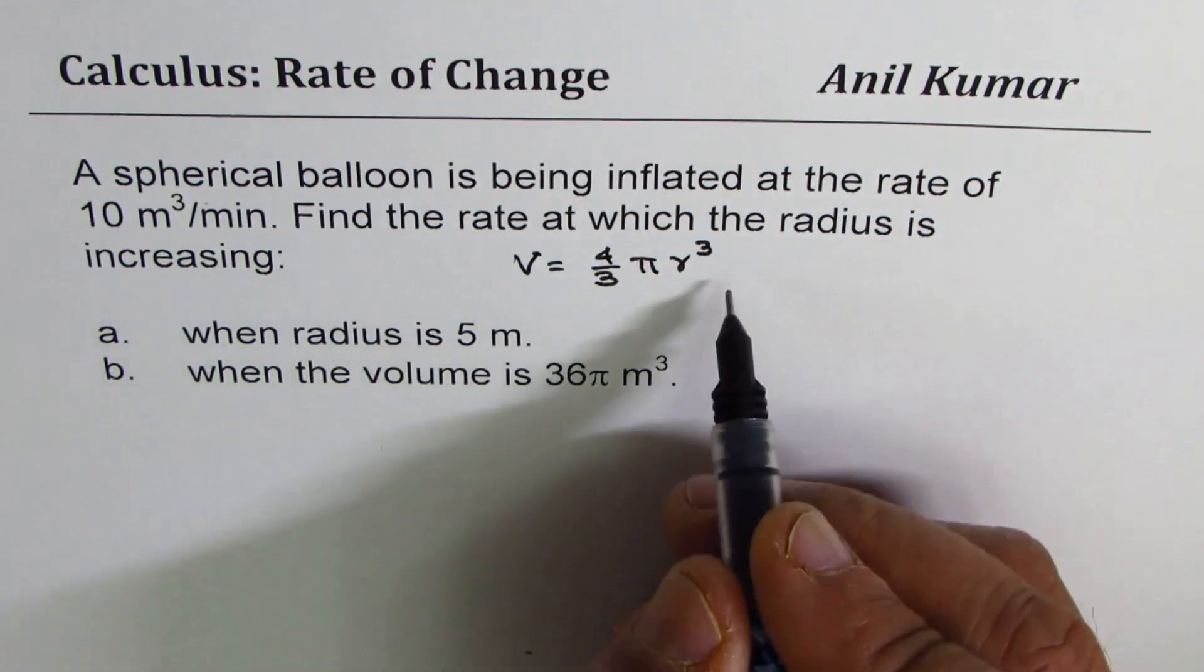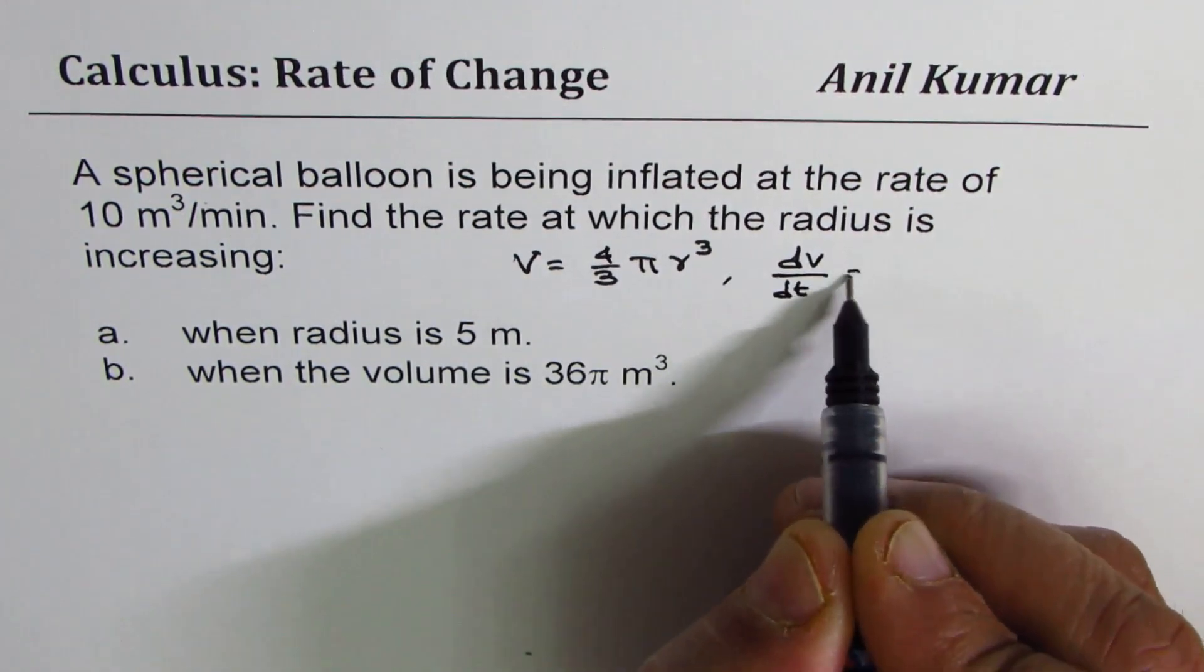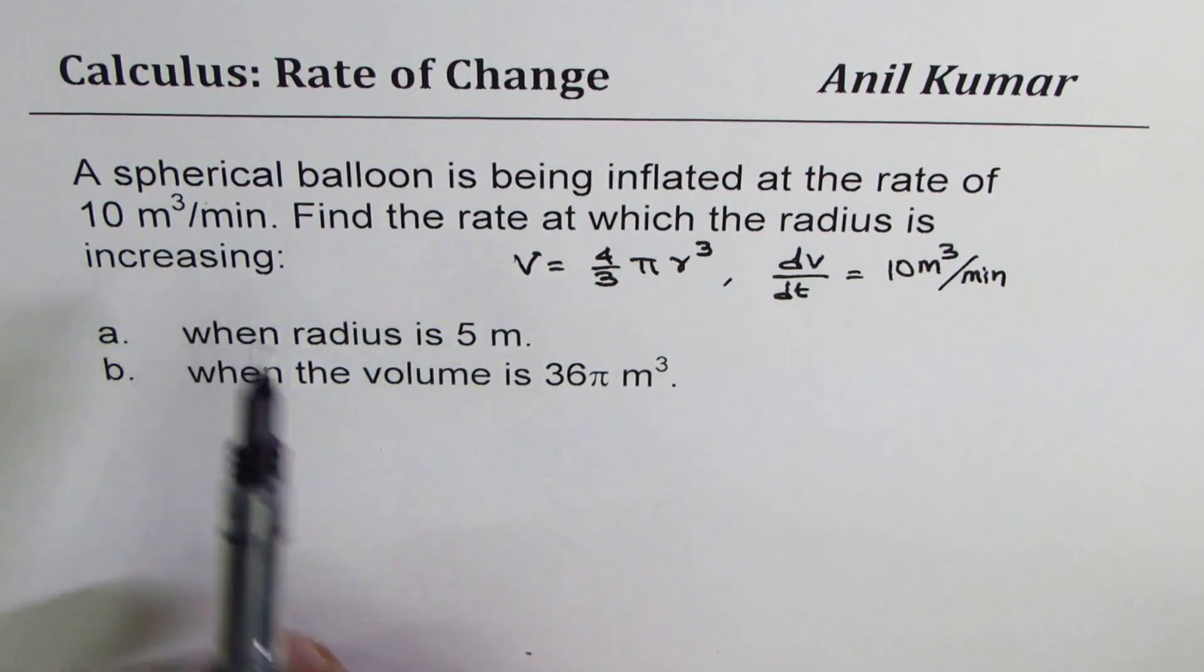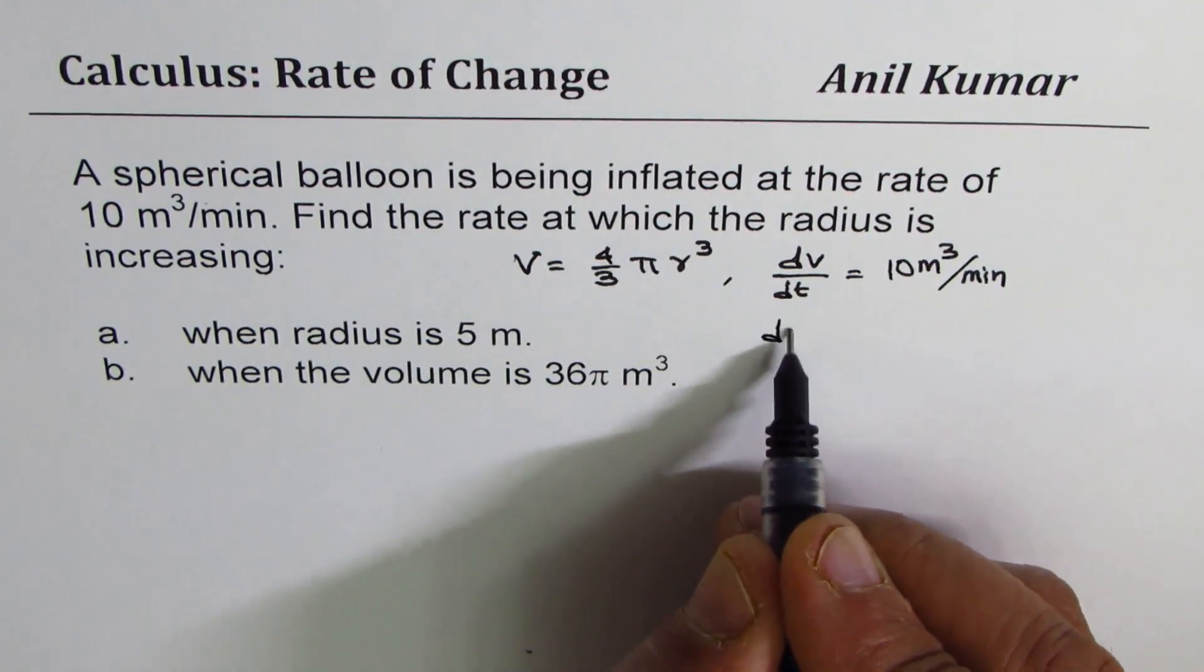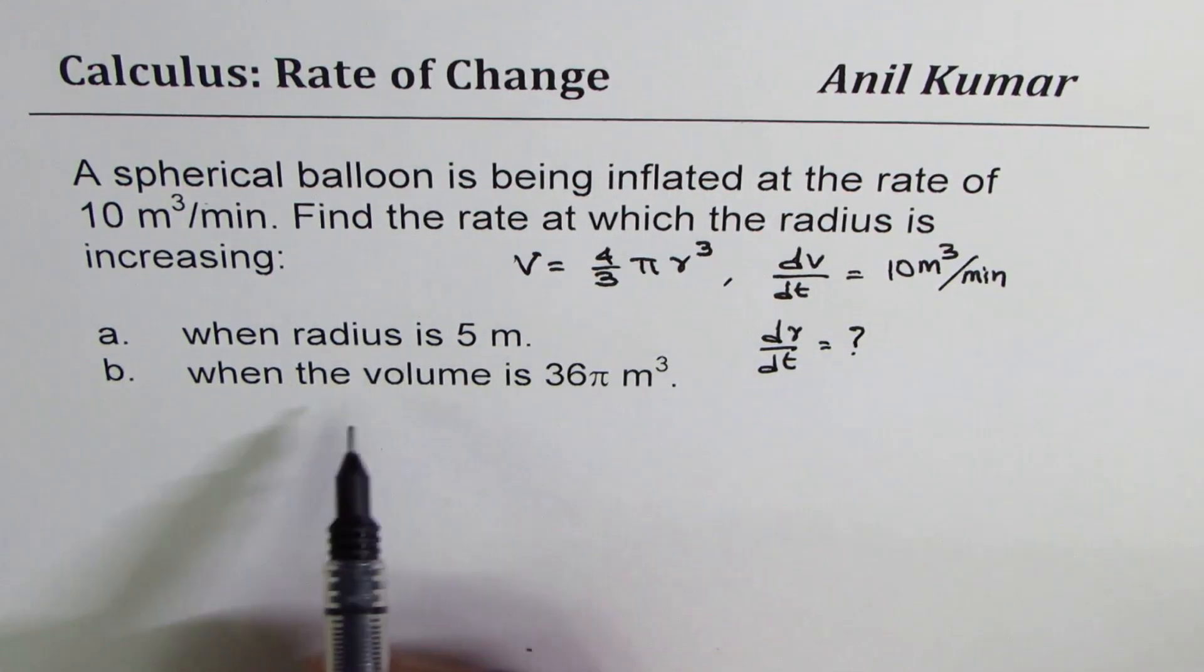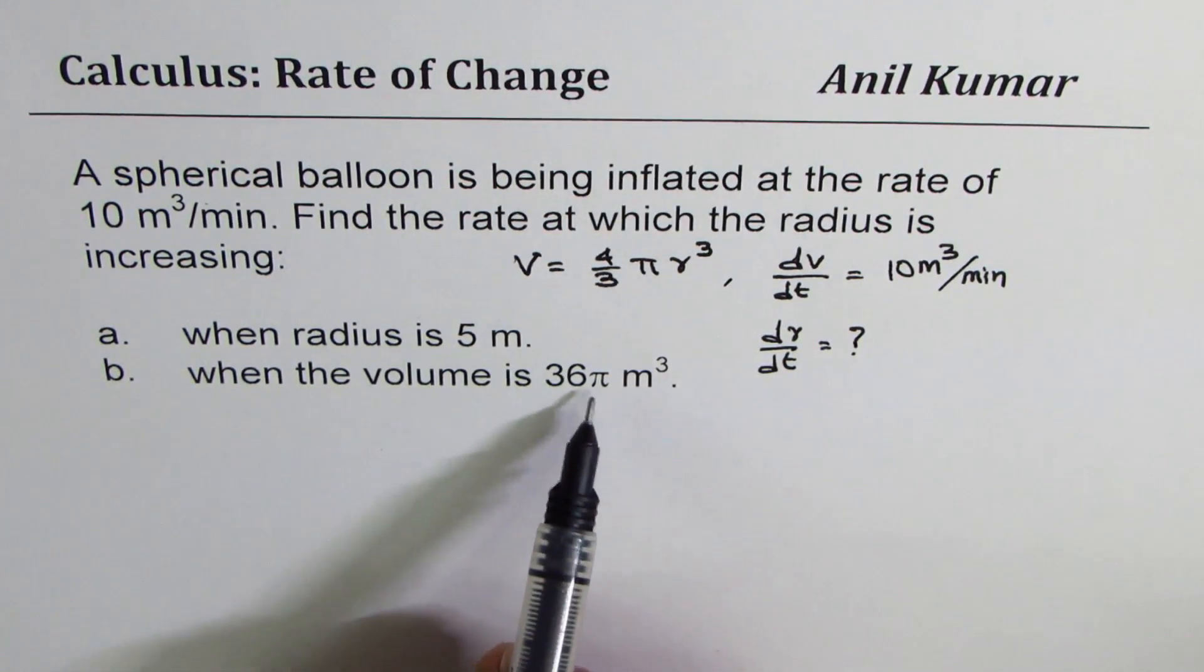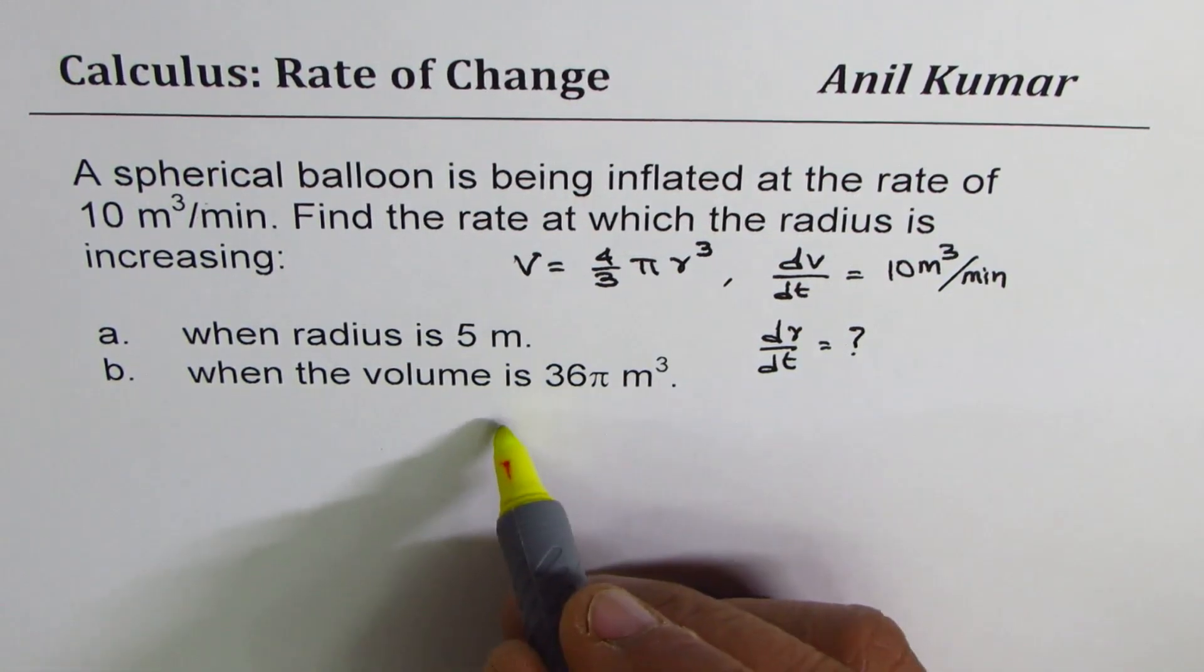We are given in this particular question, dv dt is equal to 10 meter cube per minute. And what we need to find is rate of change of radius. We need to find dr dt for two different conditions. a is when radius is 5 meters and b is when volume is 36 pi meter cube. So let's do this one by one.